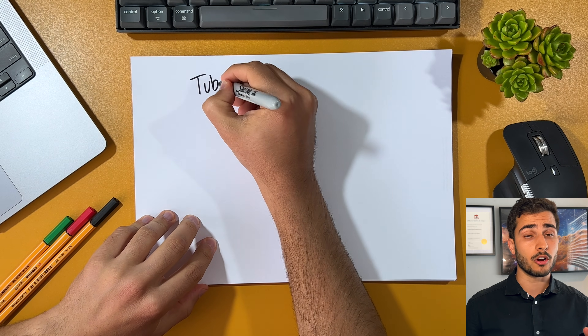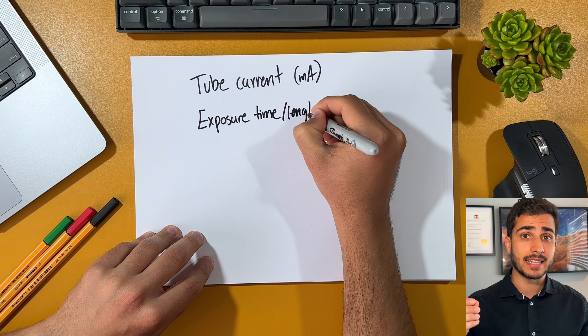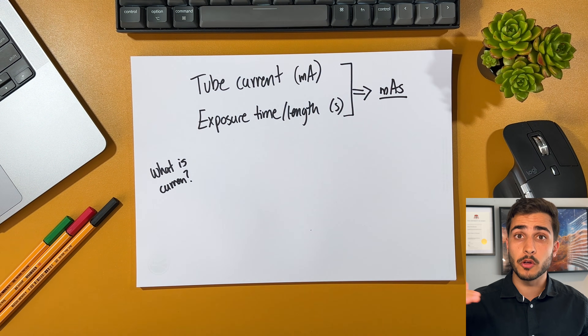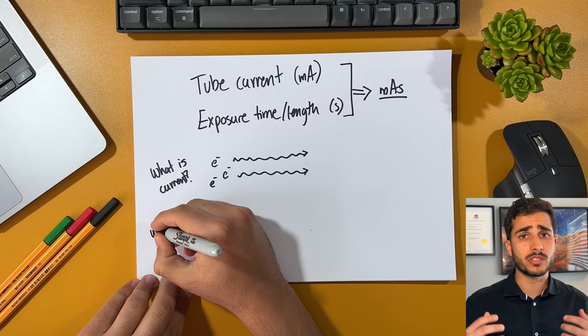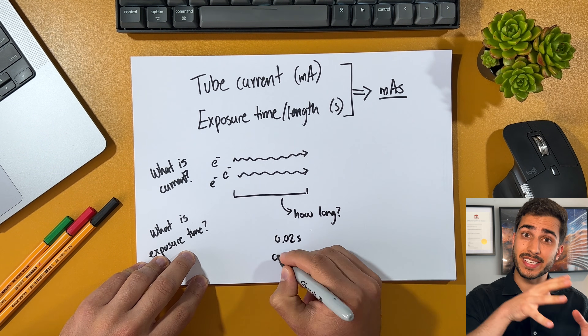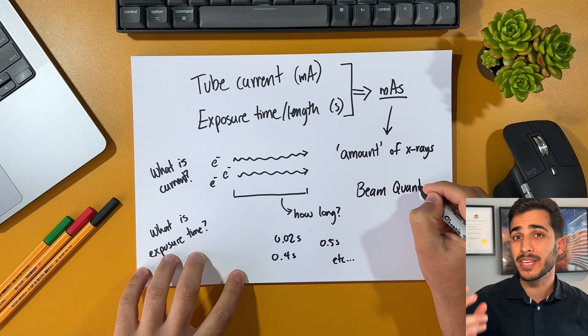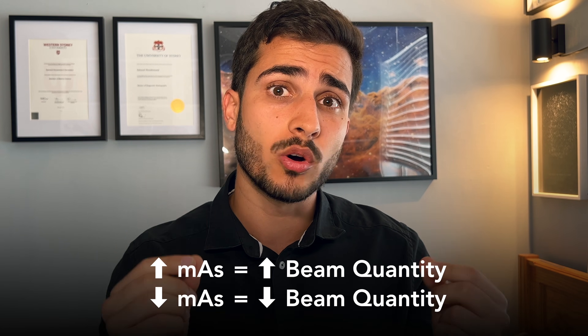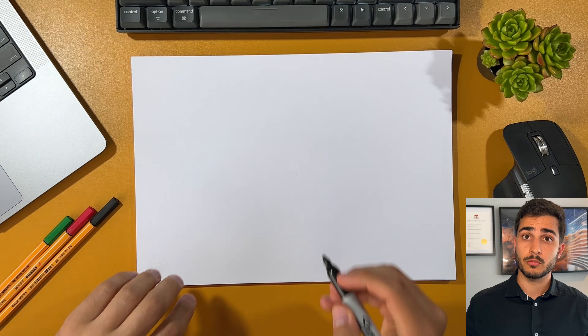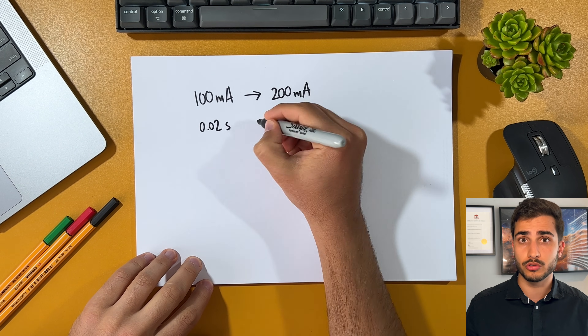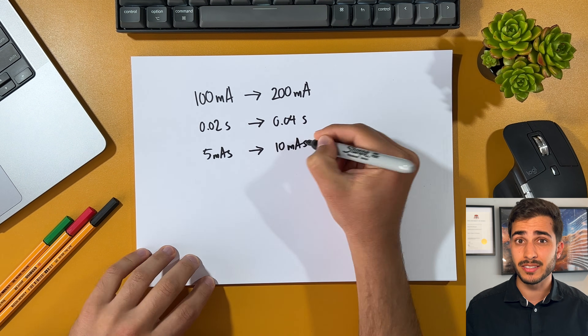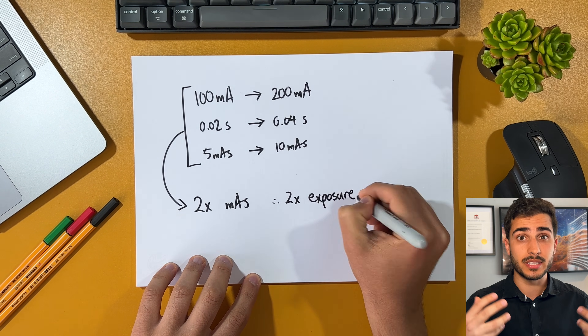Let's start with MAS. MAS is a combination of tube current — MA — and the exposure time or length in seconds. Current is defined as the flow of electrical charge facilitated by electrons, and the length of an exposure is how long we allow these electrons to flow from the cathode to the anode. MAS therefore determines the amount of x-rays coming out of the tube and controls what's known as the beam quantity — the number or quantity of x-ray photons in an exposure event. Whether we increase or decrease the MAS, it increases or decreases the beam quantity linearly. Going from 100 to 200 MA, or 0.02 to 0.04 seconds, or 5 to 10 MAS — all of these scenarios result in doubling the MAS, or basically doubling the exposure or beam quantity.